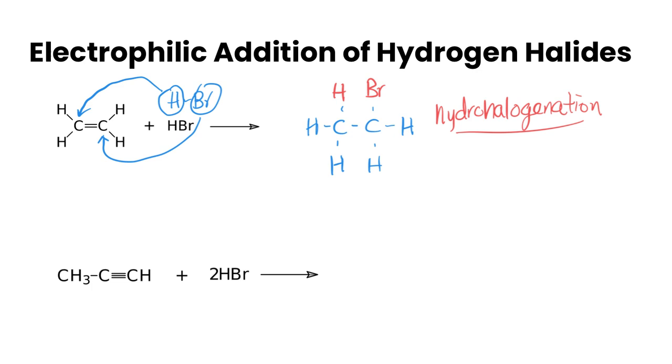In the second example we actually have a couple of varieties of products that can be produced. Let's look at our alkyne and adding one HBr. We have to decide where the H is going to add across this triple bond and where the bromine is going to add. If we added the Br to the first carbon, we'd have a one bromo substituted compound. If we added the bromine on the second carbon, we'd have a two bromo product. We need to distinguish which one we're making.